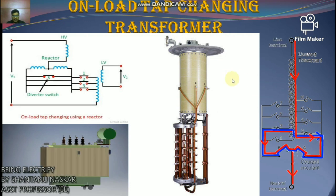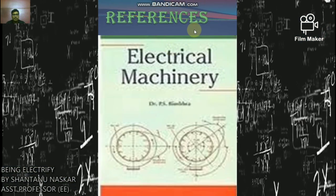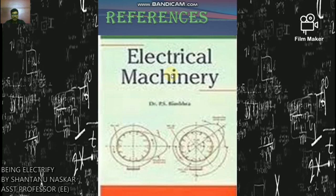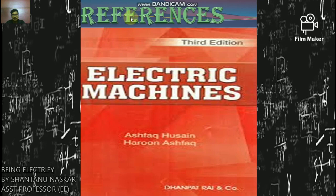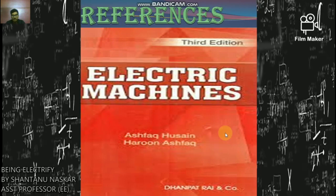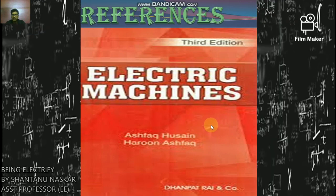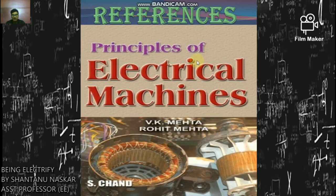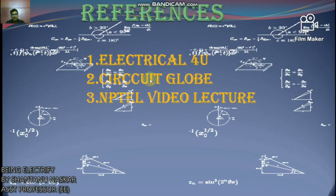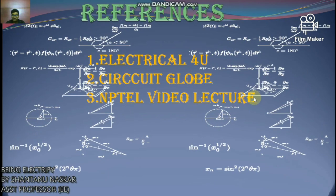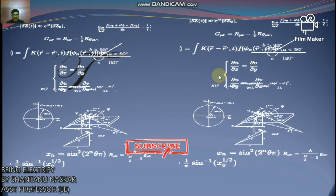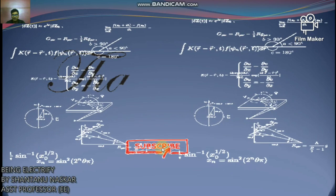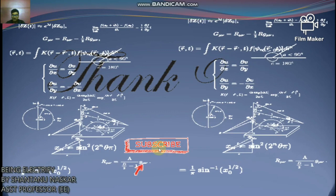Some reference books for this course: first is 'Electrical Machinery' by Dr. Fitzgerald — in my opinion, the best book in electrical engineering. Second is 'Electrical Machines' by A.K. Sawhney and Harun — very good for B.Tech and diploma students. Third is 'Principles of Electrical Machines' by V.K. Mehta — very good for clearly understanding electrical machines. Also useful are the websites Circuit Globe and NPTEL video lectures by IIT. Thank you, hope you enjoyed the lecture. If you have any queries, comment in the comment box. Like, share, comment, and subscribe.